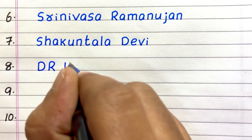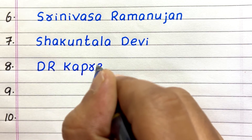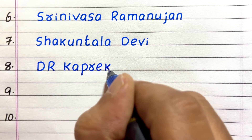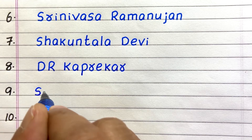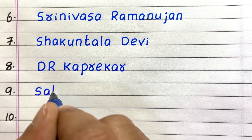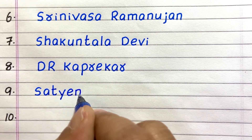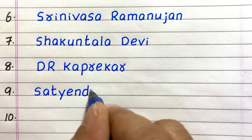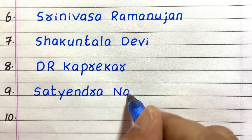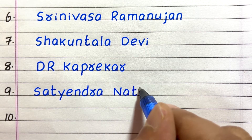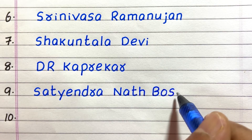8th name of a famous Indian mathematician is Dr. Kaprekar. 9. Satyandranath Bose.